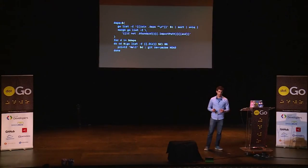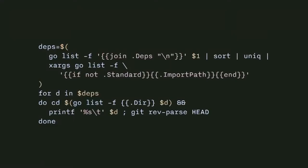For example, if you're pushing code to a continuous integration server, a build farm, or a co-worker's computer. It's actually not that hard to produce this list — a couple of shell commands, assuming your dependencies use git. That's more or less what the GoDep save command originally did: get that list of commit IDs and packages and write it to a file.